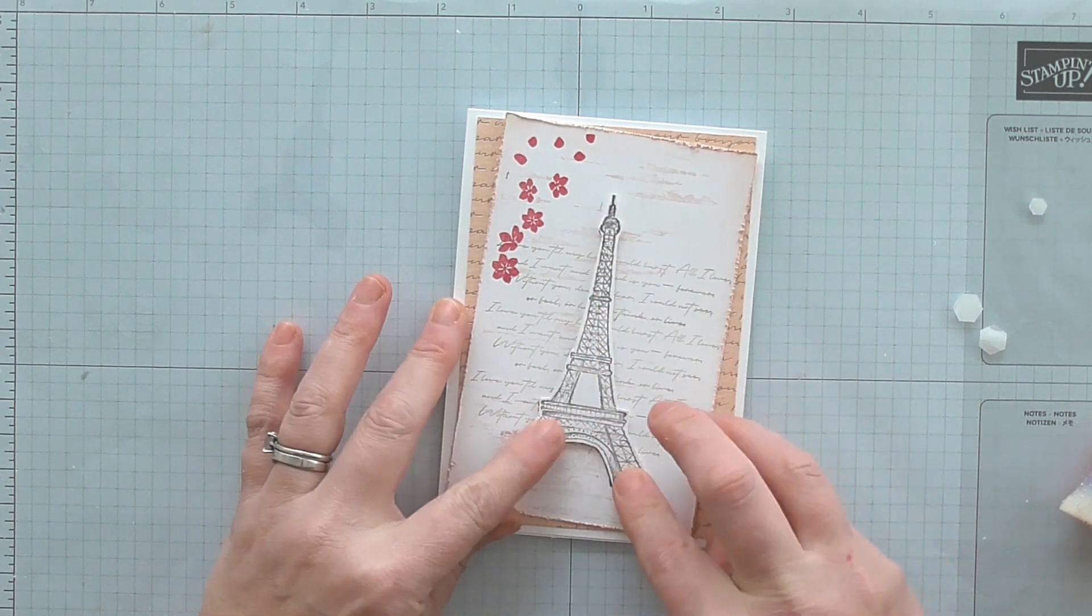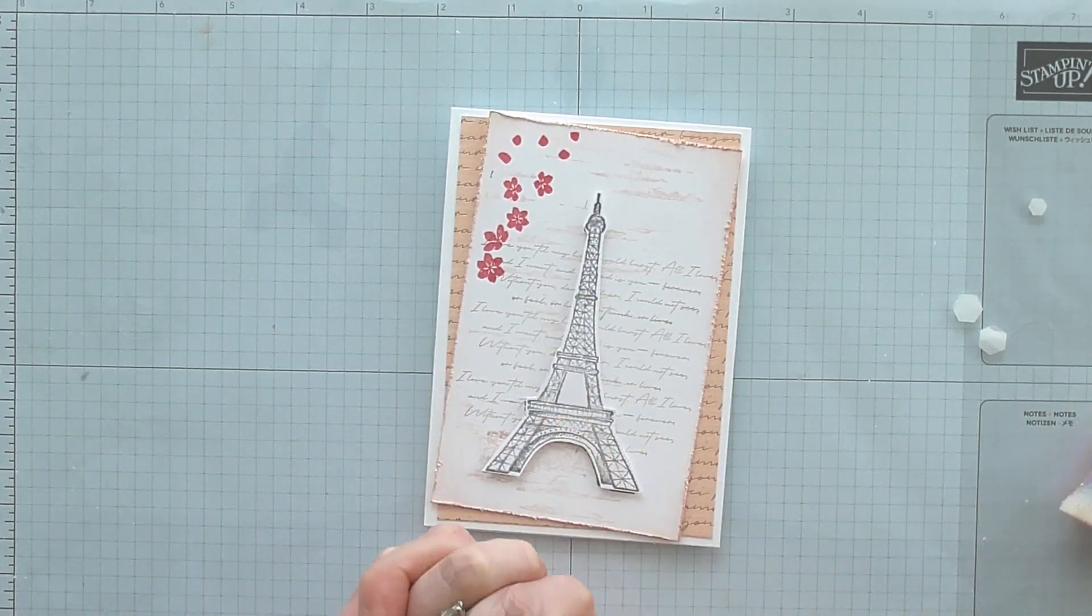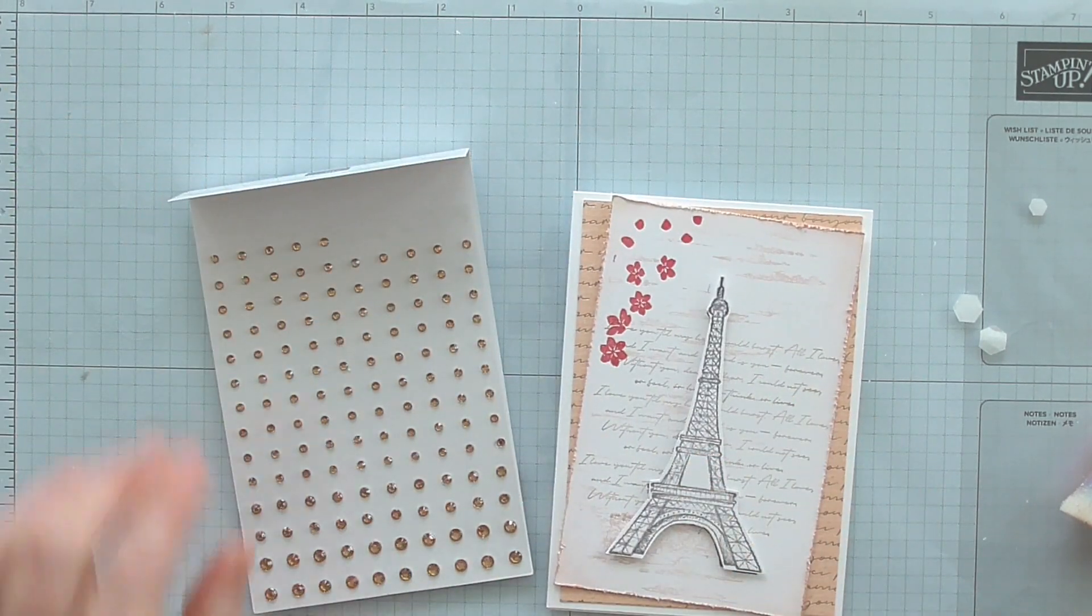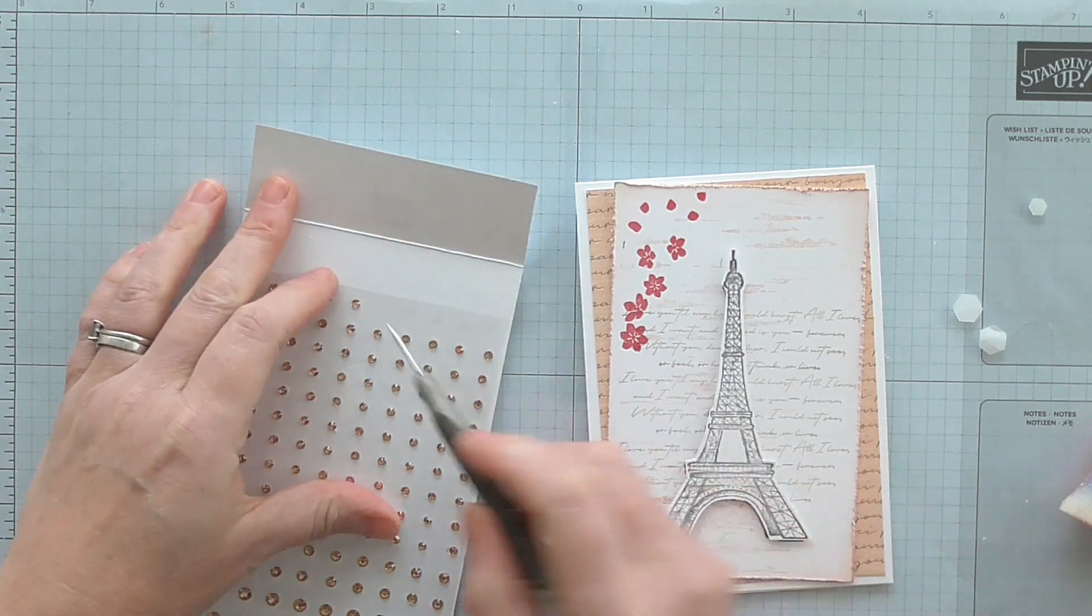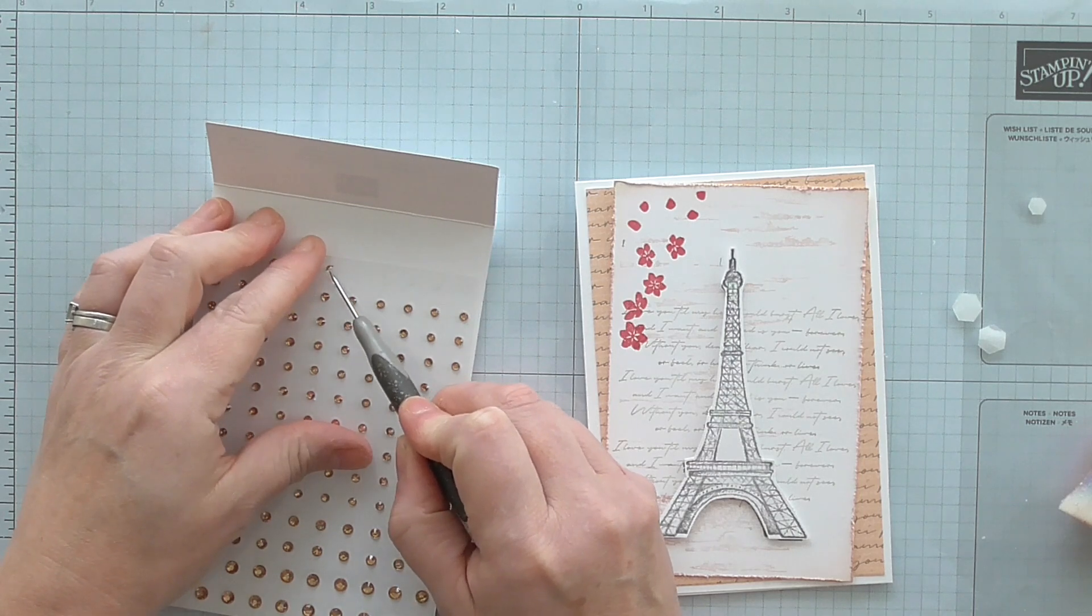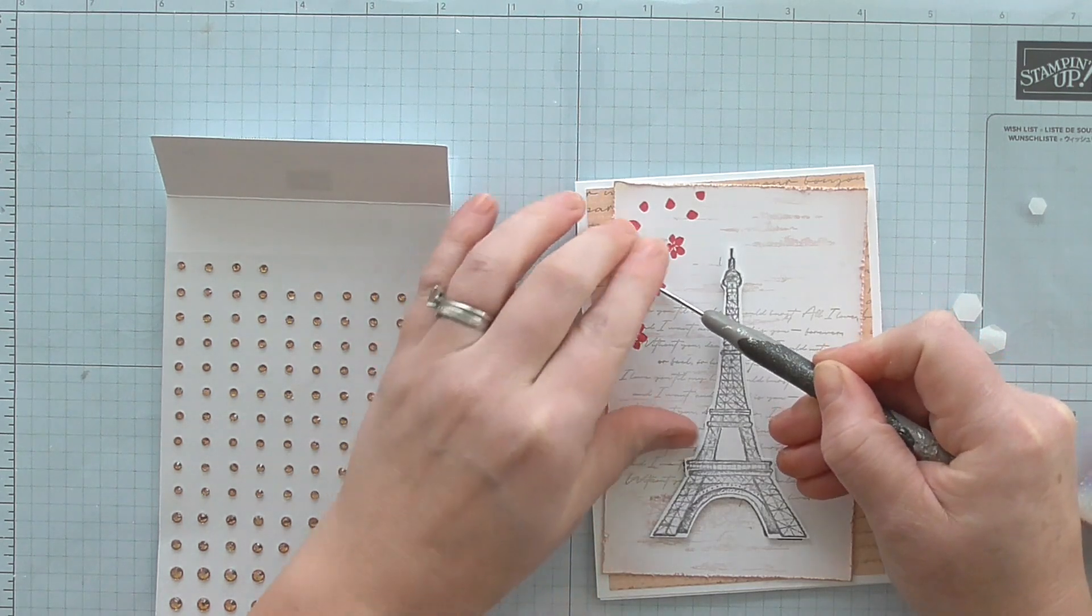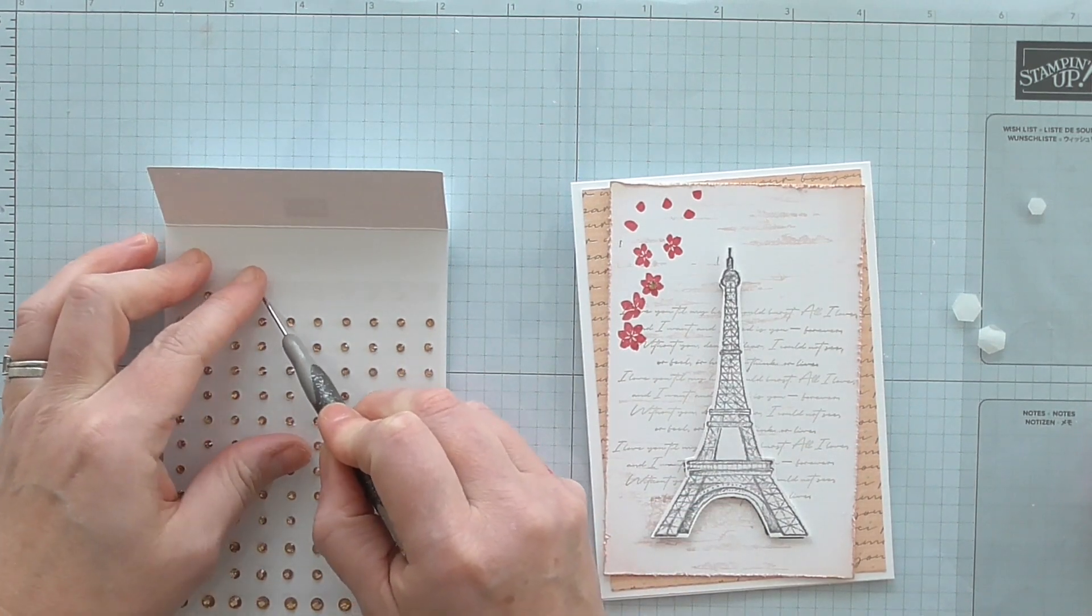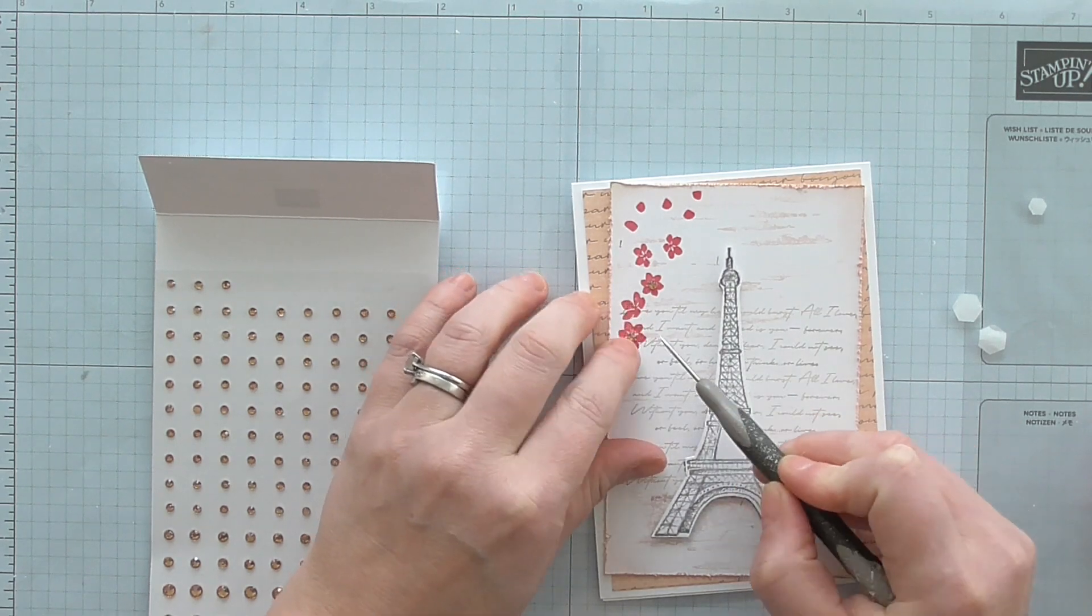We're just going to add one more thing to step it up just that little bit further. We need some sparkle and so these are the brand new champagne rhinestone basic jewels. They're absolutely beautiful. I've used a few because I did make this card yesterday and when I was filming it I was on a roll, I was loving it, and then when I'd finished I realized I hadn't switched the camera on. So I was a little bit annoyed but I thought oh well I'll do it again tomorrow, it doesn't matter.